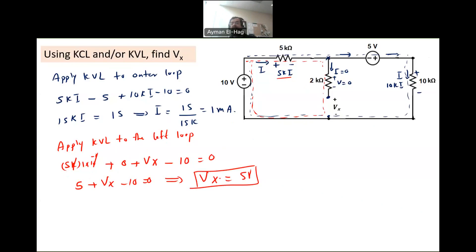So as you can see here, Vx has actually a value, although the current that goes through this branch is equal to zero.